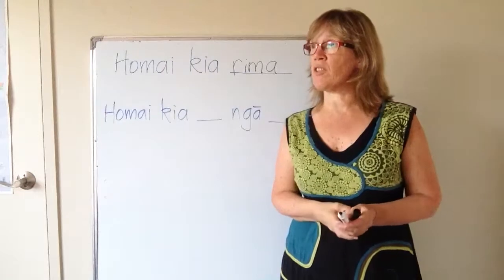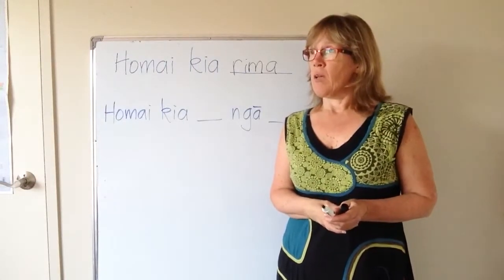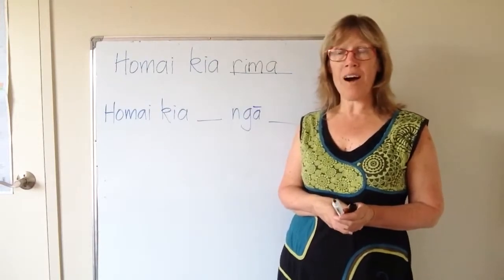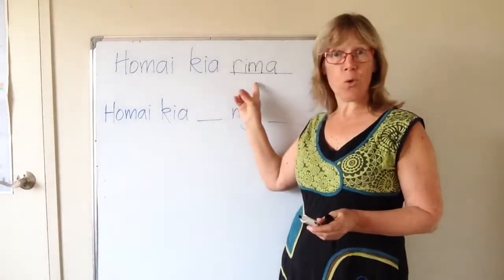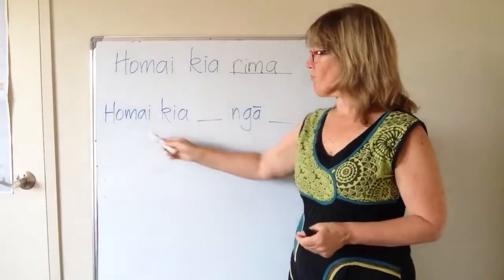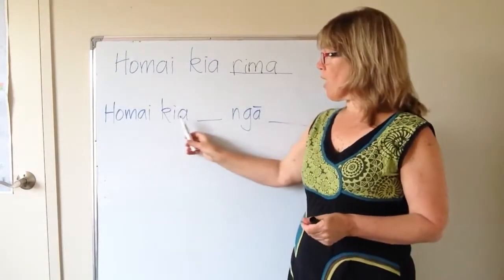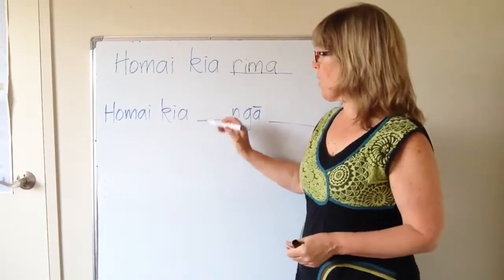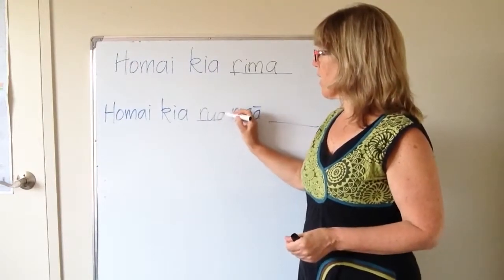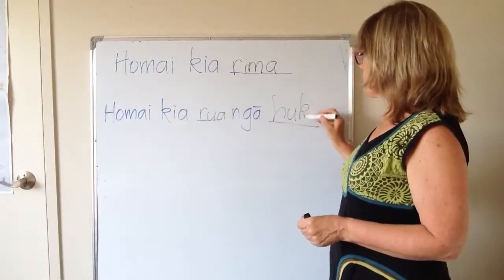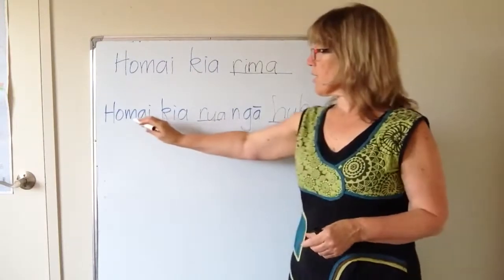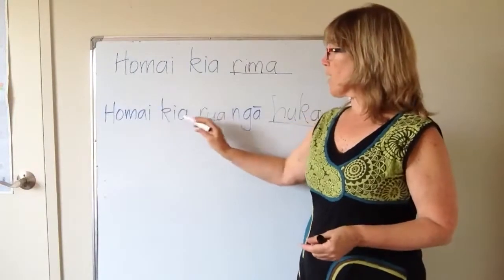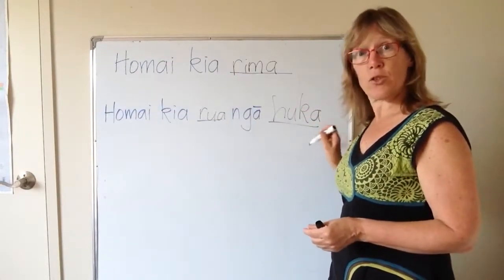Maybe I wanted to have some kittens — 'ho mai kia toru' — three kittens. So then 'ho mai kia', if you want to say what the thing is: 'ho mai kia rua nga huka' — give me two sugars.